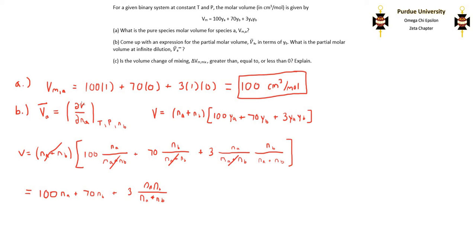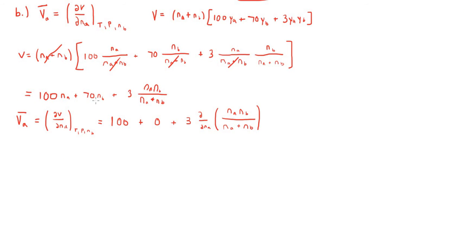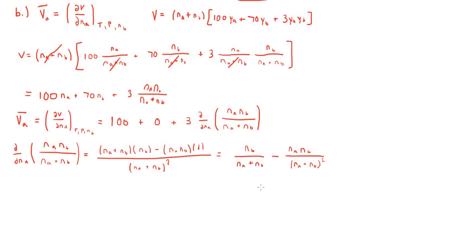Now that this expression is easier to work with, we can substitute it in and take the partial derivative with respect to Na to get V̄A. When taking the derivative, you have to use the quotient rule. After taking the quotient rule, NB over Na plus NB is equal to YB, and the remaining term, split as Na over Na plus NB times NB over Na plus NB, is the same as YA times YB. So we can write this out in terms of YA and YB.